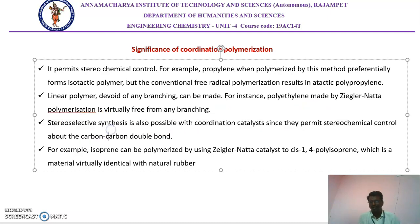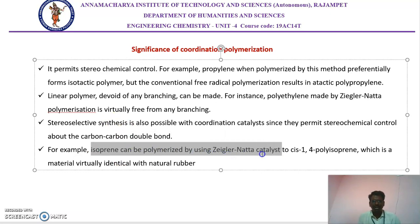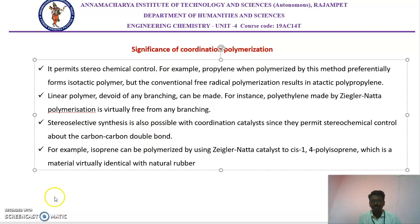Next is stereo selectivity. Stereo selectivity means the arrangement of molecules in a three-dimensional structure — that is called stereoselective synthesis. This kind of polymerization allows us to obtain a stereoselective polymer along the carbon-carbon double bond. Finally, isoprene is the best example of stereoselective synthesis. In the case of isoprene, polymerization with the Ziegler-Natta catalyst gives cis-1,4-polyisoprene, which is called natural rubber. So if we want to prepare something like natural rubber, we can use this Ziegler-Natta catalyst for isoprene in a laboratory method. These are the significance of coordination polymerization reactions.